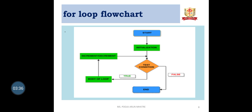For Loop Flowchart: Start with initialization of the variable, then test the condition. If the condition is true, execute the body of the loop, then apply the increment or decrement operator. The condition is tested again, and the loop body executes repeatedly until the condition becomes false. Once the condition becomes false, the for loop ends.